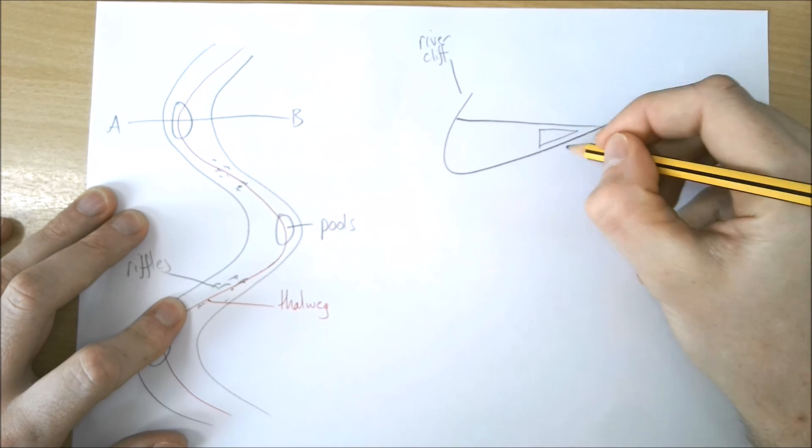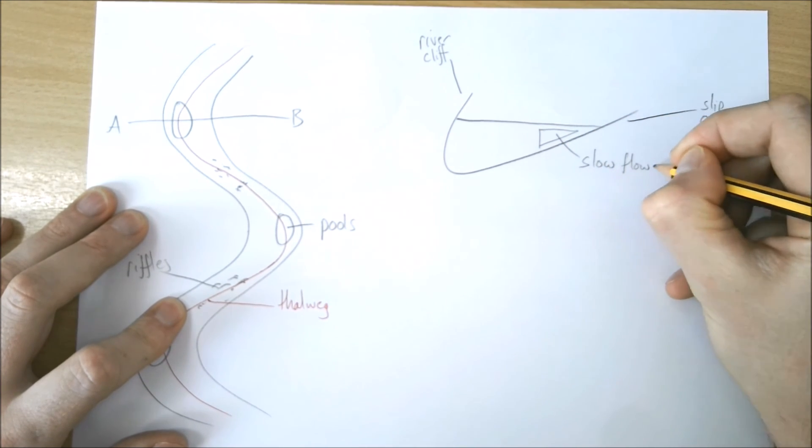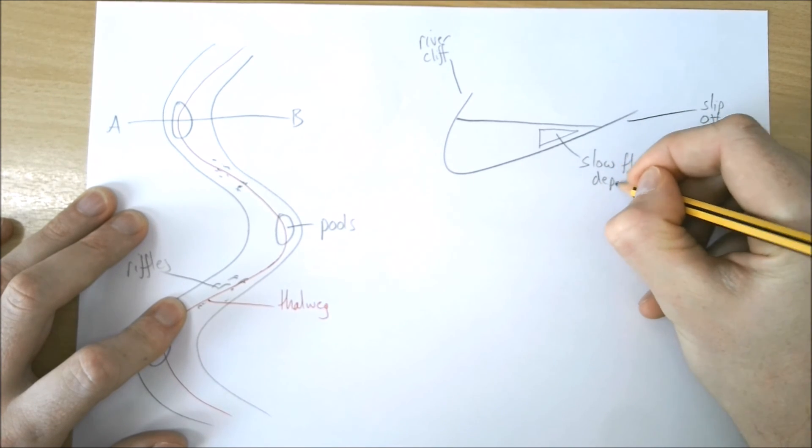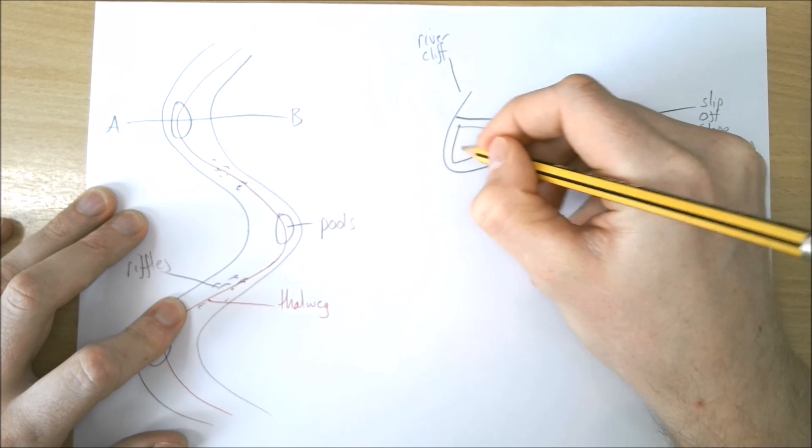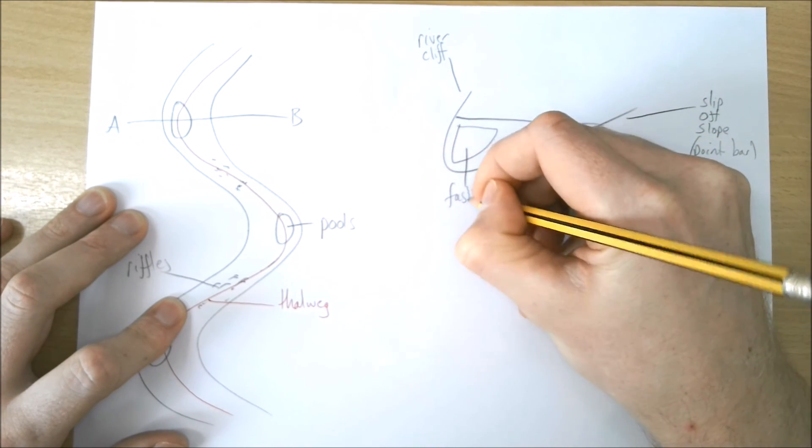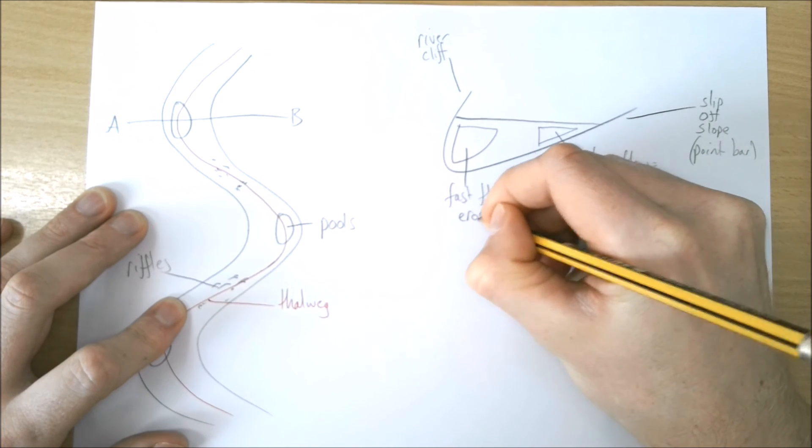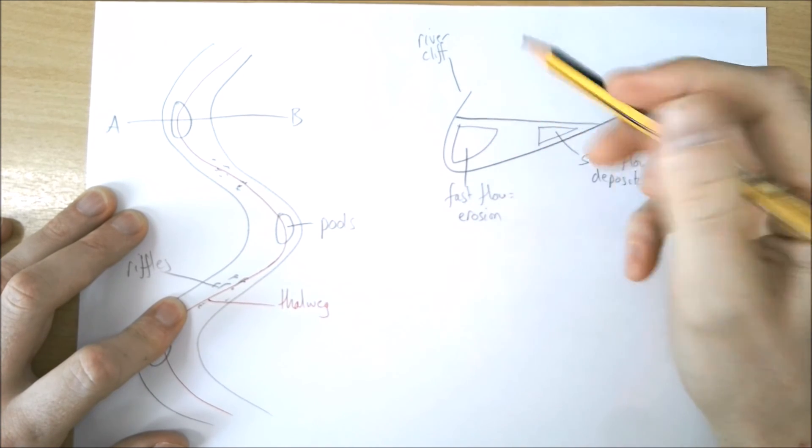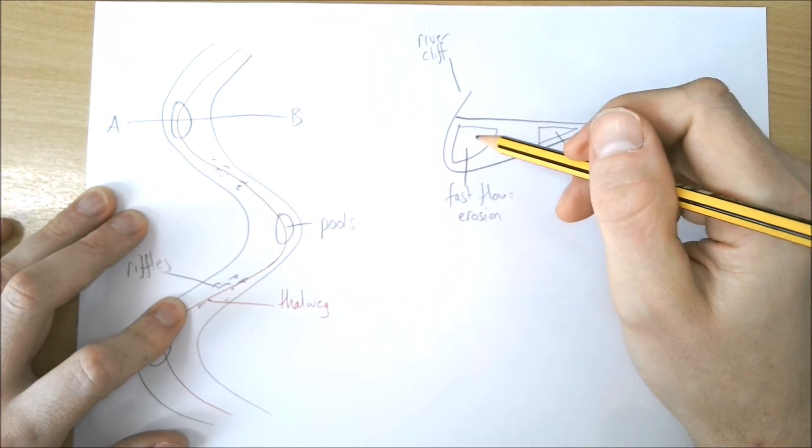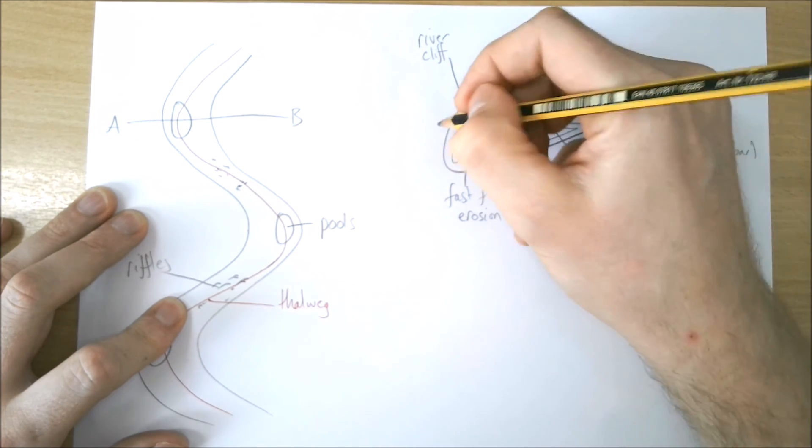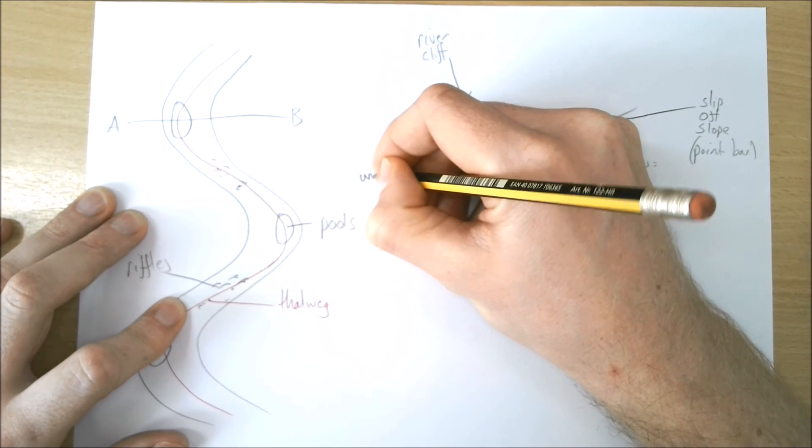The flow here is slow, so slow flow equals deposition. Whereas this side has fast flow, which equals erosion. We're talking mostly hydraulic action, abrasion, and at A-level we'll want to mention cavitation. As a result of that erosion, we get undercutting.